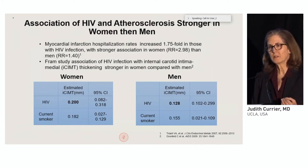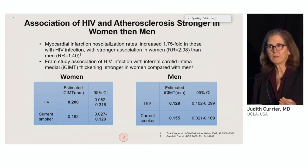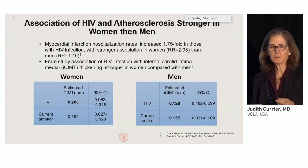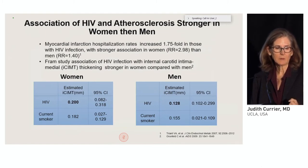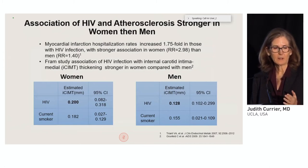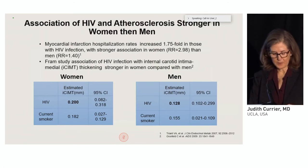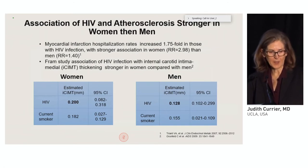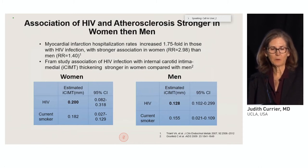A study looking at carotid intima-medial thickness examined the effects of HIV and smoking on carotid thickness. It showed that for women, the excess risk was 0.2, while for men it was 0.128 — similar to the effects of smoking.